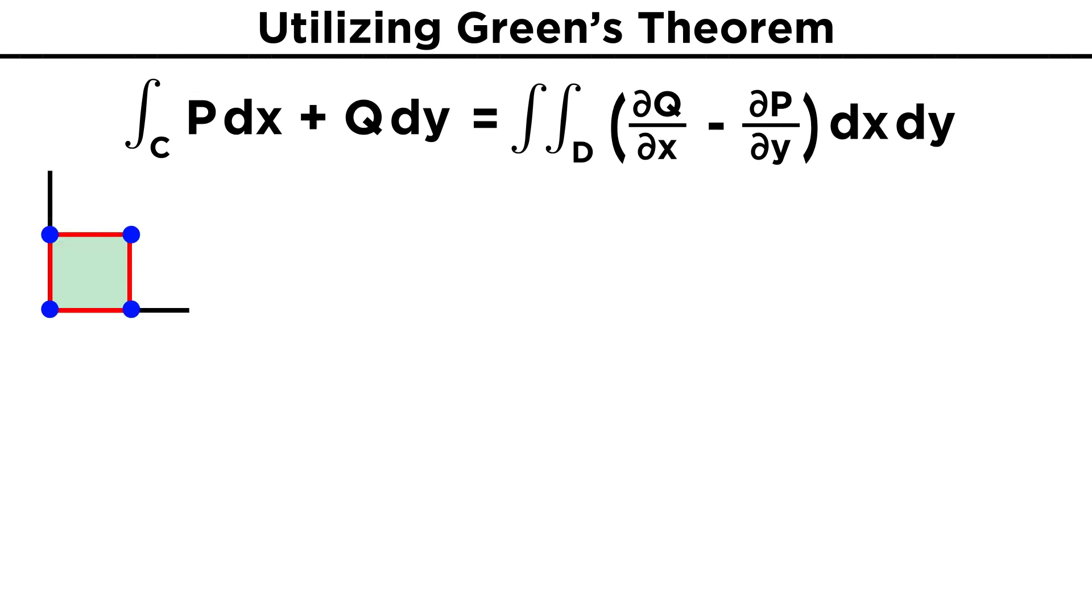Now for an example, let's say we have the curve shown here made of four line segments that make a square, from (0,0) to (1,0) to (1,1) to (0,1) and back to the origin. We also have a vector field of F equals <xy, x²>, and we want to find the line integral over C of F dot dr. We could split the curve into the four line segments and do each line integral individually, but using Green's Theorem can give us a much faster and simpler calculation.